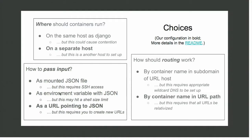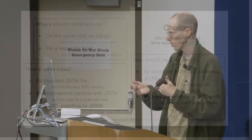There are a few different configuration choices. I've highlighted the ones we've made that we're using in production, but different environments might use a different setup. For instance, where should the containers run? In development, it's easiest to do it on the same host, but as both the visualizations and the main application become more processor intensive, you probably want to separate those. How should input be passed? If it's running on the same machine, it's easiest to mount it. Environment variables are another possibility if it's running on a separate machine, but that could run into a limit depending on size, or you can just pass in a URL which points to JSON.